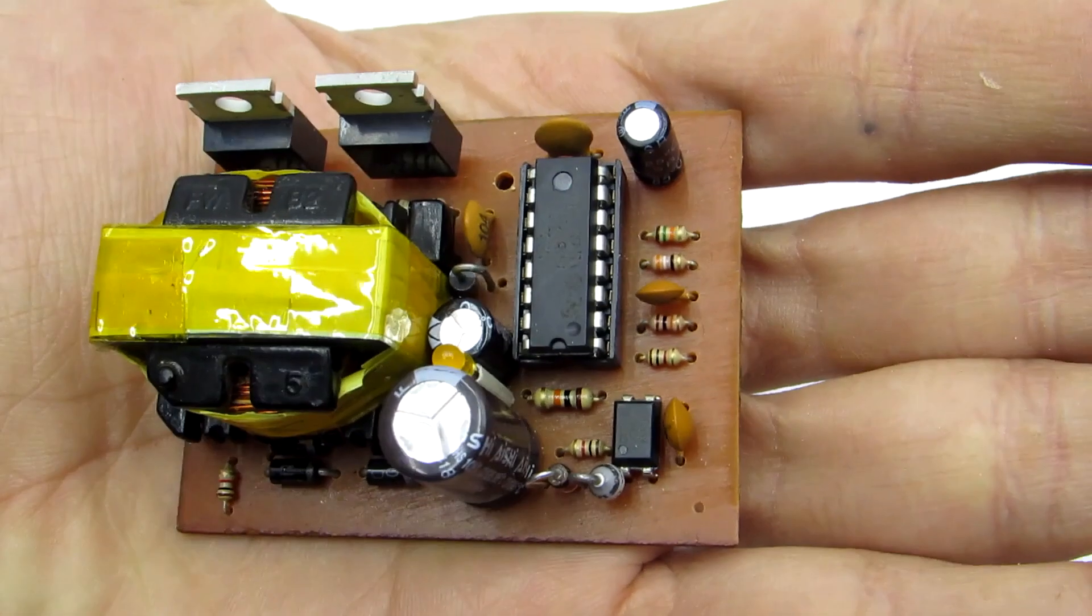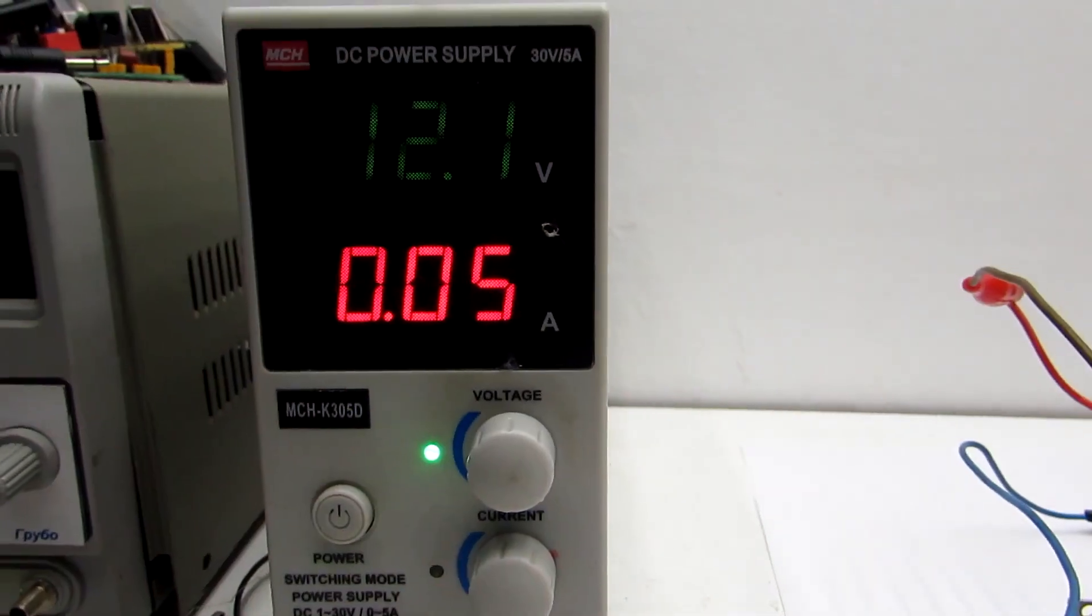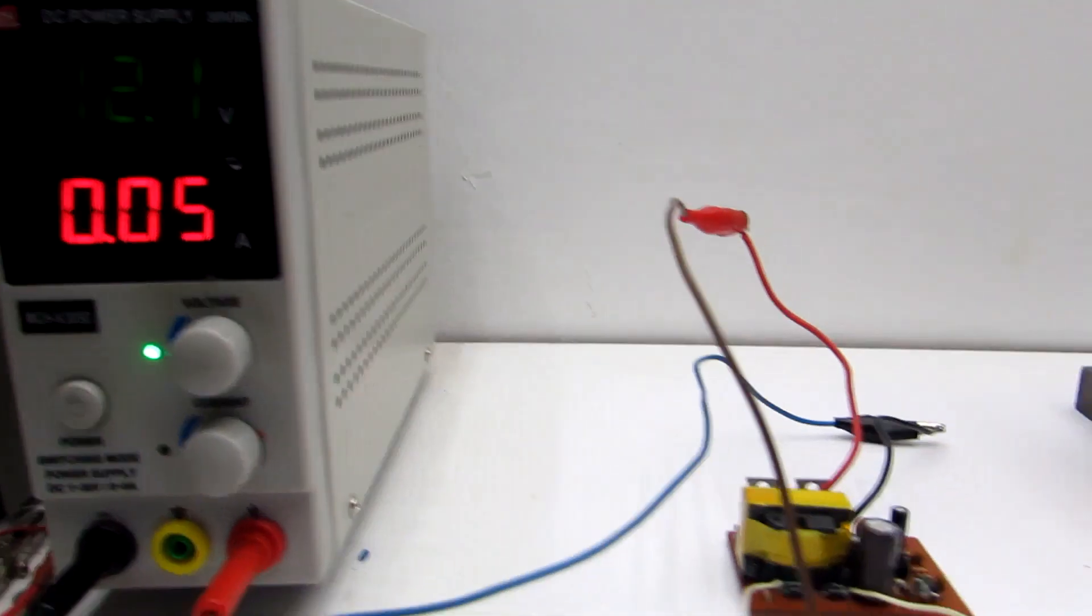Hi friends! Today I will show how to make a compact voltage converter from 12 to 220 volts with stabilization of the output voltage.